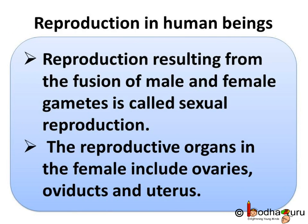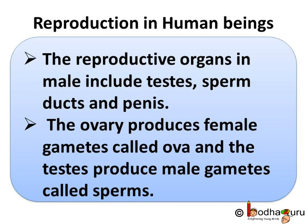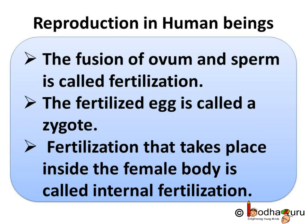To sum up what we learned today: reproduction resulting from the fusion of male and female gametes is called sexual reproduction. The reproductive organs in the female include ovaries, oviducts (the fallopian tubes), and the uterus. The reproductive organs in the male include testes, sperm ducts, and penis. The ovary produces female gametes called ova, and the testes produce male gametes called sperms. The fusion of ovum and sperm is called fertilization, and the fertilized egg is called a zygote. Fertilization takes place inside the female body and is called internal fertilization.